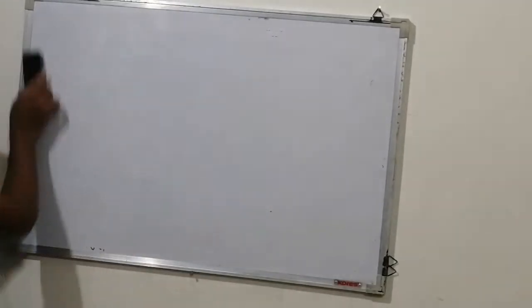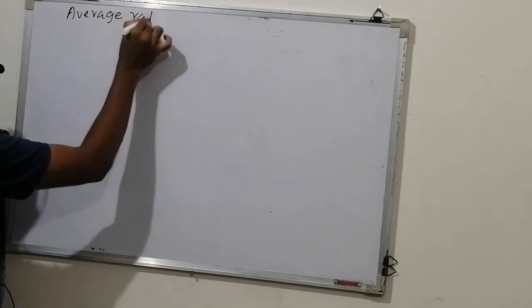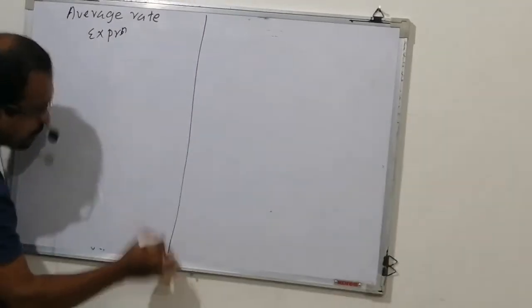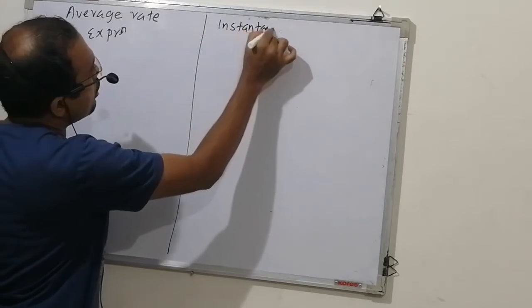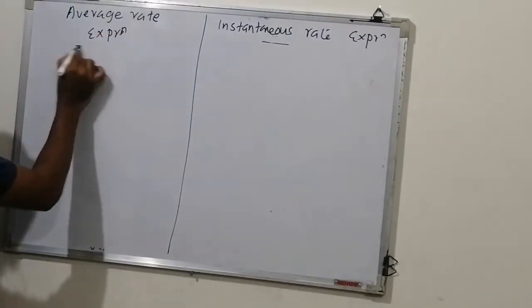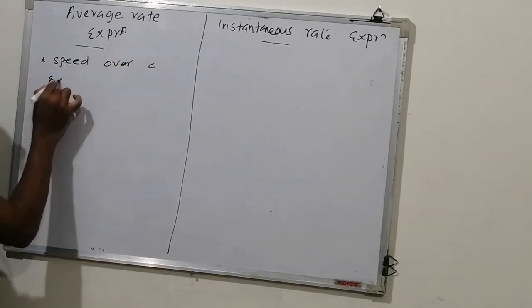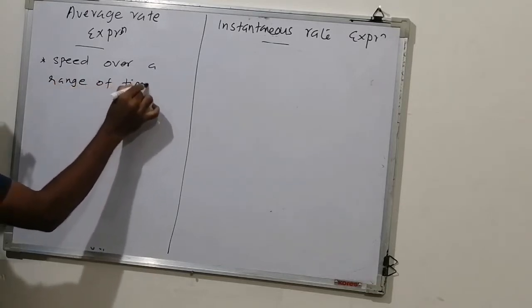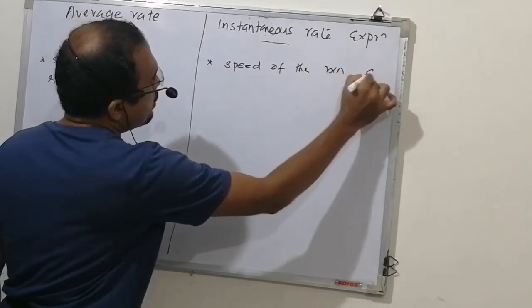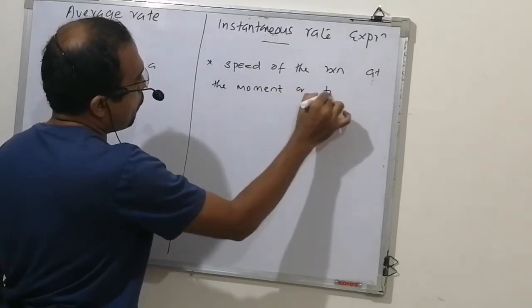Look at here. We have average rate expression and instantaneous rate expression. What is rate? Rate is nothing but speed. Average rate: it is speed over a range of time. Instantaneous rate: it is speed of the reaction at the moment, at the time.